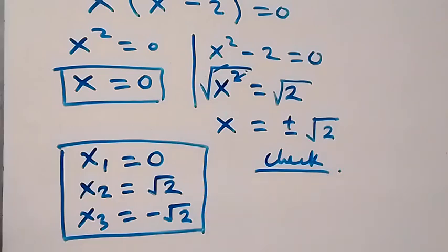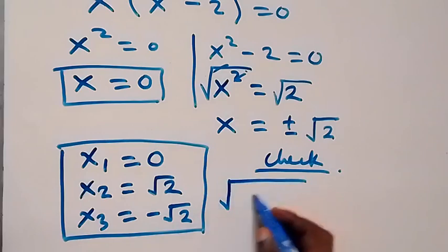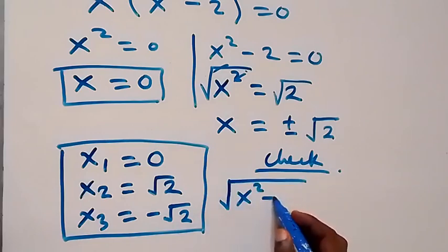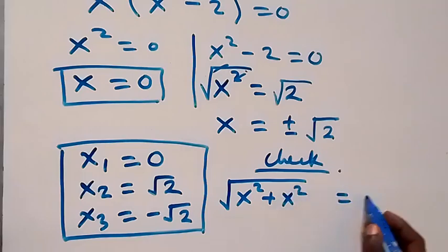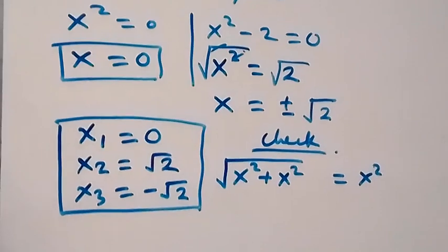Now we check if these solutions satisfy the original equation √(x² + x²) = x². For the first one, x equals 0.